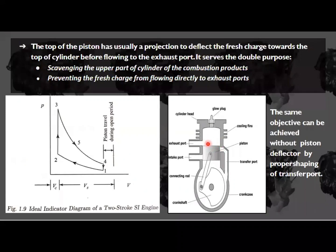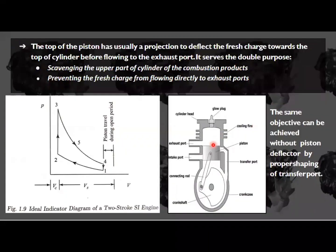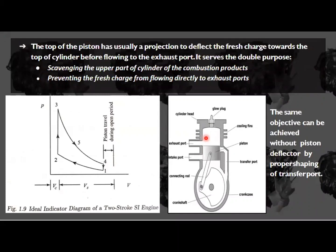There is a chance of fresh charge leaving through the exhaust port. To prevent this, there is a deflector on the piston. The deflector directs the gases to the top of the cylinder; otherwise, they would leave directly from the exhaust port before combustion. Because of this mixing of fresh air-fuel mixture with exhaust gases, there are impurities and the efficiency of the two-stroke engine is decreased.